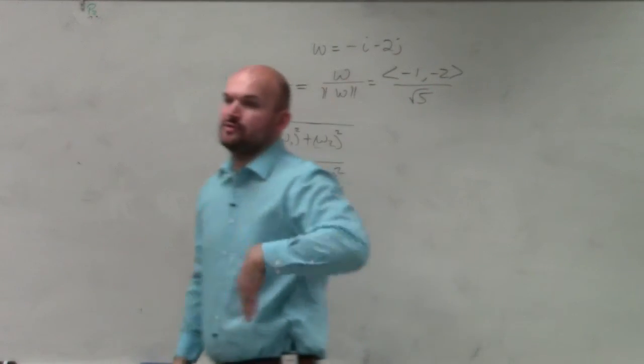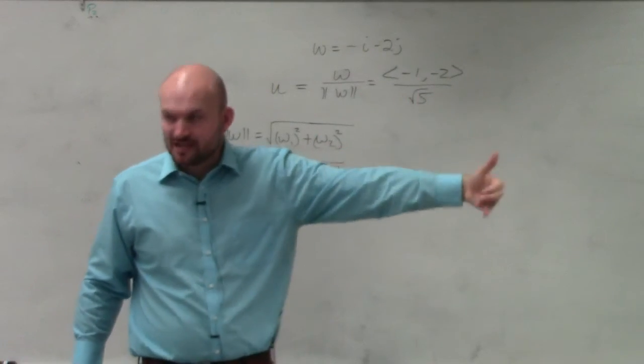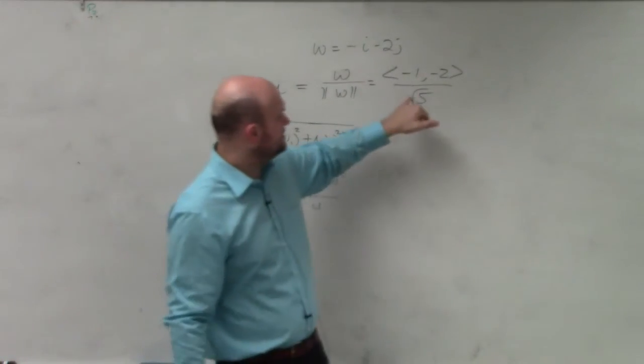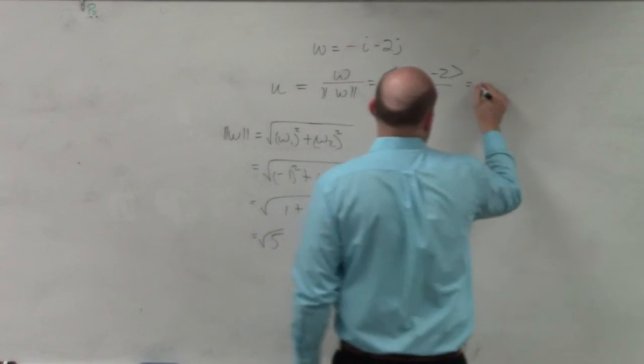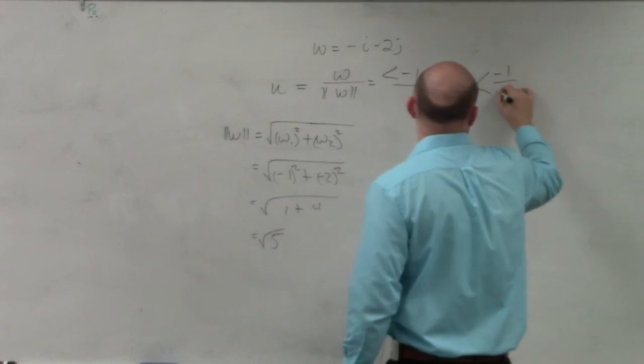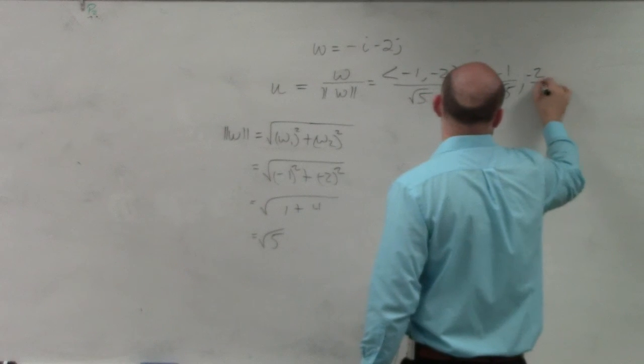Now, last class period I showed you how you could rewrite that as a multiplication of a fraction. I'm just going to show you here. This basically can divide into both of those. So therefore, my final answer would be negative 1 over the square root of 5, comma, negative 2 over the square root of 5.